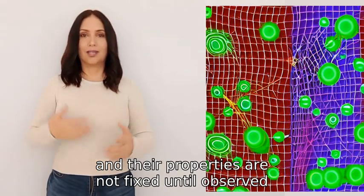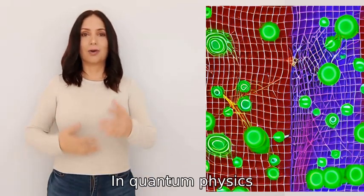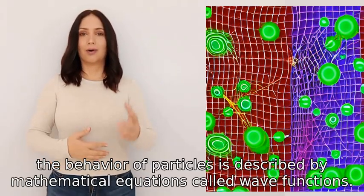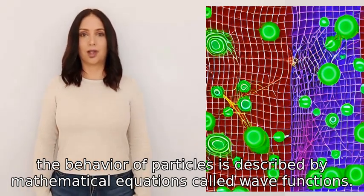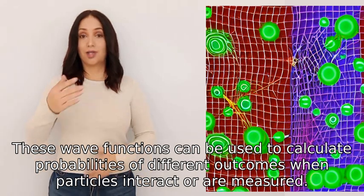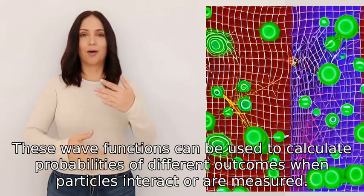Their properties are not fixed until observed, called wavefunction collapse. In quantum physics, the behavior of particles is described by mathematical equations called wave functions. These wave functions can be used to calculate probabilities of different outcomes when particles interact or are measured.